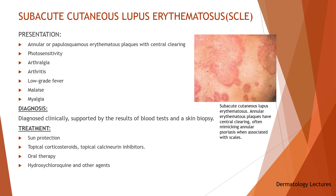Subacute cutaneous lupus erythematosus presents either in an annular or a papulosquamous form. Photosensitivity is a major component and the lesions are generally confined to sun-exposed surfaces. Patients commonly present with arthralgias or arthritis, low-grade fever, malaise, or myalgias. Systemic disease is mild to moderate and the incidence of renal disease is low. Subacute cutaneous lupus erythematosus can be diagnosed clinically, supported by blood tests and a skin biopsy. Treatment includes sun protection, topical corticosteroids, topical calcineurin inhibitors, or oral therapy with hydroxychloroquine and other agents.